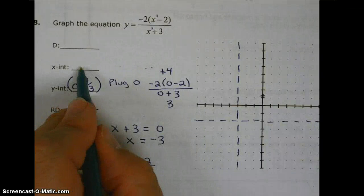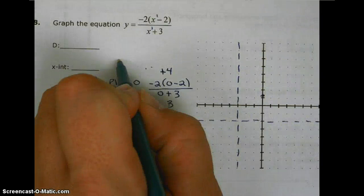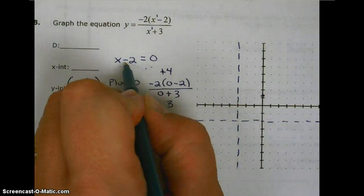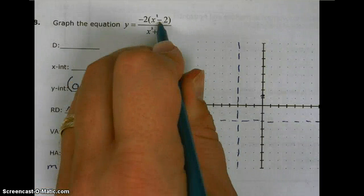For the x-intercept, to find the x-intercept, we take the numerator and set it equal to 0. The factor in the numerator, the factor is x minus 2.